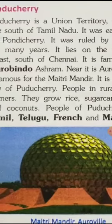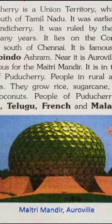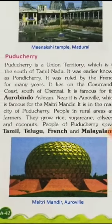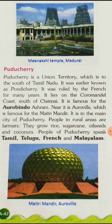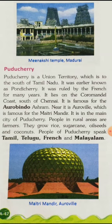This is the picture of Matrimandir, located in the main city of Puducherry. In rural areas, people are farmers and they grow rice, sugarcane, oilseeds and coconut. The main languages of Puducherry are Tamil, Telugu, French and Malayalam.